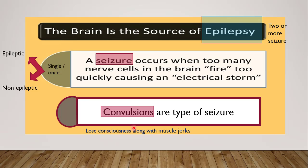We can describe this with the help of an image. Epilepsy is the largest category, then seizure, then convulsion. In epilepsy there are seizures, but these seizures can be with convulsion — when it is epilepsy — and without convulsion when it is not epilepsy. When seizures are with convulsions, it is an epileptic attack. When seizures are without convulsions, it is a non-epileptic attack.